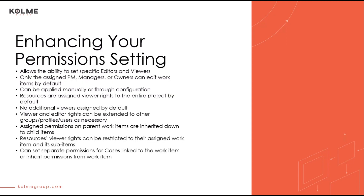Enhanced permissions are effectively the opposite of the basic setting. Where viewership rights are implied with the basic setting, the viewership rights must be explicitly granted with enhanced. Any user that does not have a role or an explicit permission level applied to a project will not be able to view it. These permission levels can be applied manually on a record, through system configuration, or rolled down from a parent item. Best practice is typically to grant permissions to a user group or profile. There are two permission access levels: viewer and editor. Viewers can see the project or record but cannot make changes, whereas an editor can see the record and make changes to it.